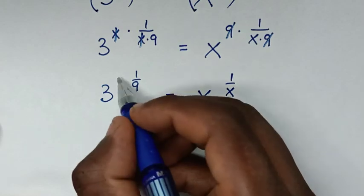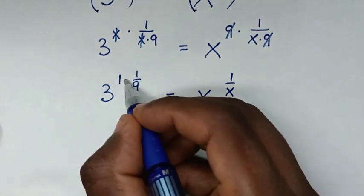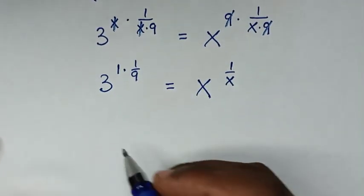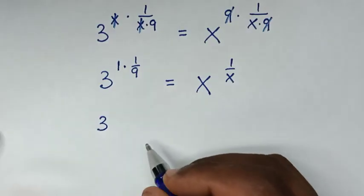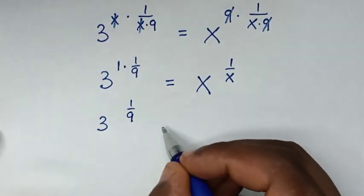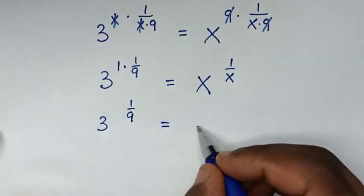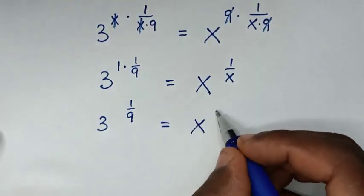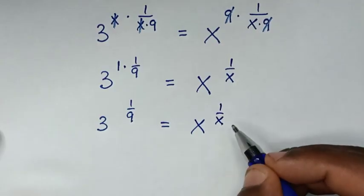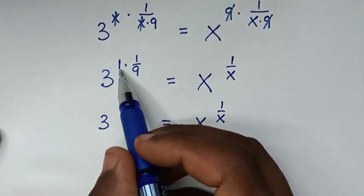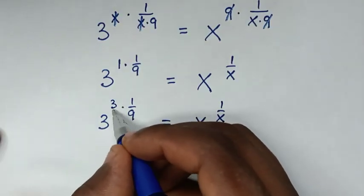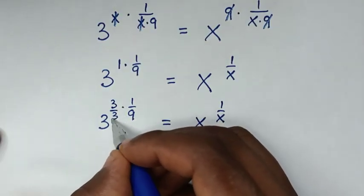This is the same as 1 times 1 over 9, giving us 3 to the power of 1 over 9, equal to x to the power of 1 over x. Now, 1 is the same as 3 over 3.